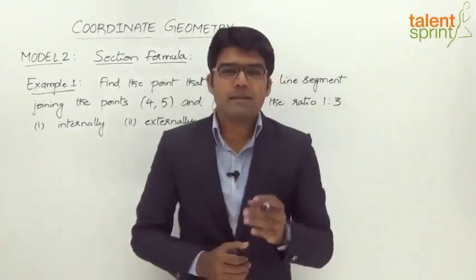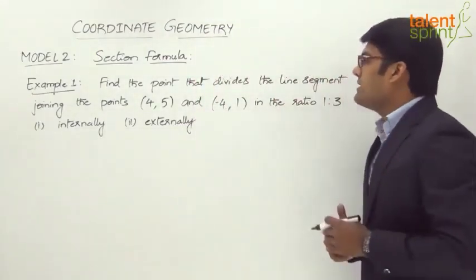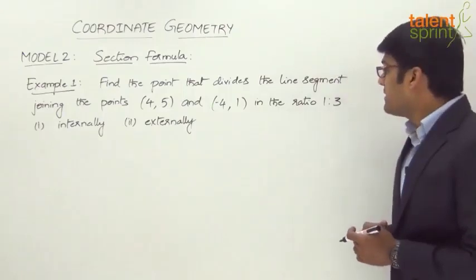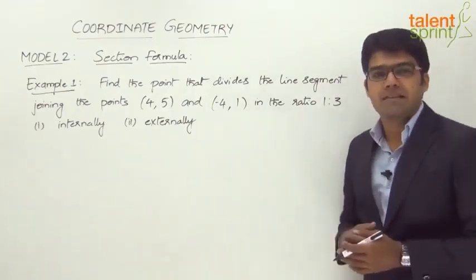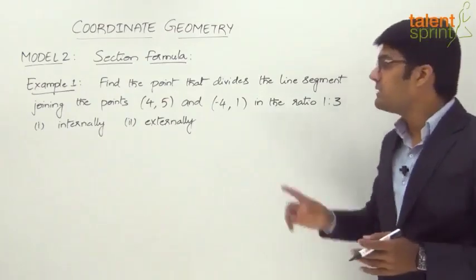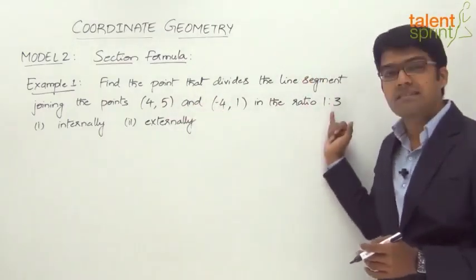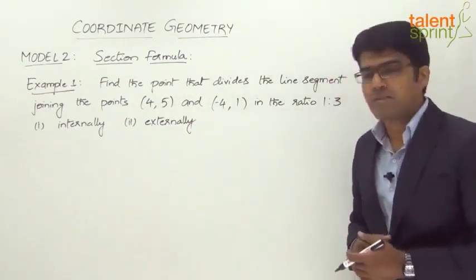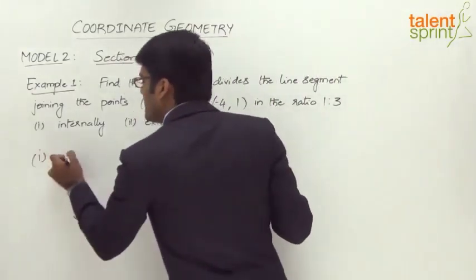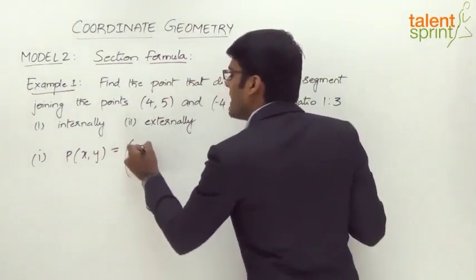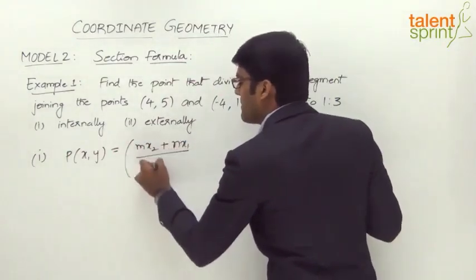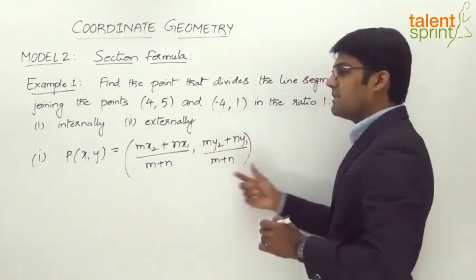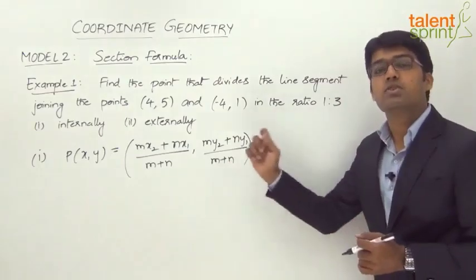Let us now take an example based on section formula. The question says: find the point that divides the line segment joining the points (4, 5) and (−4, 1) in the ratio 1 is to 3 internally and externally. So we have to find two different points — one where it divides in the ratio 1:3 internally, and one where it divides in the ratio 1:3 externally. We have the section formula for finding such points. The formula is ((mx2 + nx1)/(m + n), (my2 + ny1)/(m + n)) for internal division.